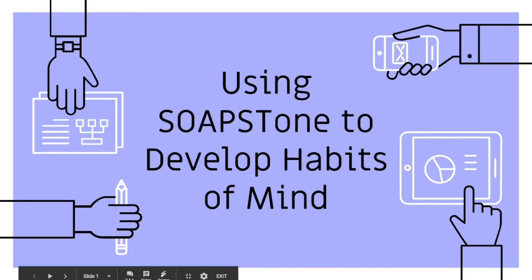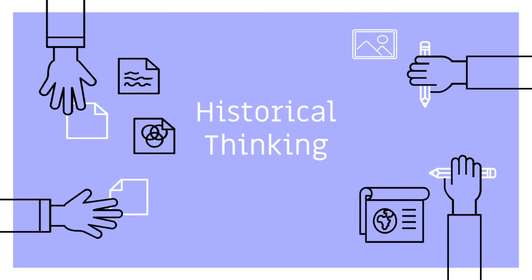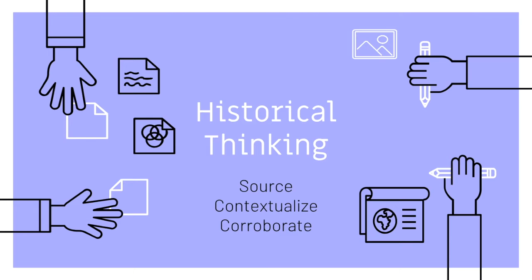In this segment, we will discuss building habits of mind using SOAPSTONE. In order for students to demonstrate the skills of historical thinking, they must be able to source, contextualize, and corroborate sources. The ability to apply these skills depends on students' ability to analyze and evaluate effectively. The sooner students begin doing this as a routine without being prompted by the teacher, the more transfer we will see.